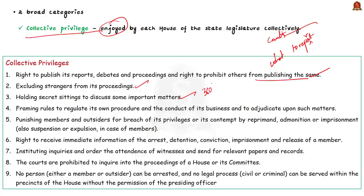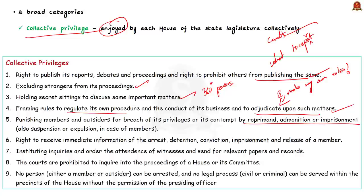Further collective privileges include: framing rules to regulate proceedings and conduct of business; punishing members and outsiders for breach of privilege or contempt by reprimand, admonition or imprisonment — or suspension and expulsion for members. Notably, in 1978, late Prime Minister Indira Gandhi was expelled from the house and imprisoned for breach of privilege under these provisions. The house also has the right to receive immediate information of the arrest, detention, conviction, or release of a member.